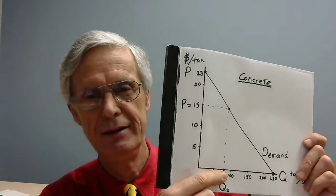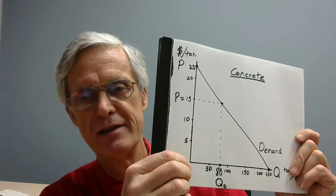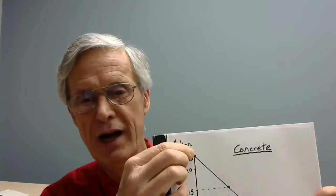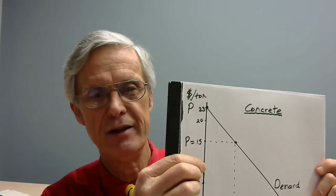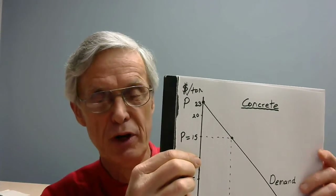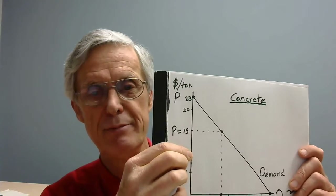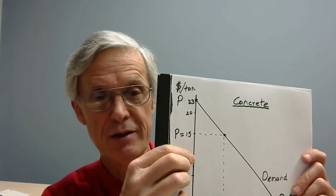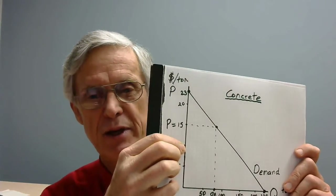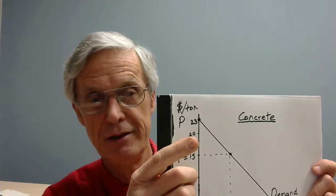So dollars per ton for price connects to how much people want to buy in tons per day. It could be per week, which would make the numbers about seven times bigger, or per month, which is a little messier since months have different numbers of days. Make sure you can connect the quantities to the prices numerically.